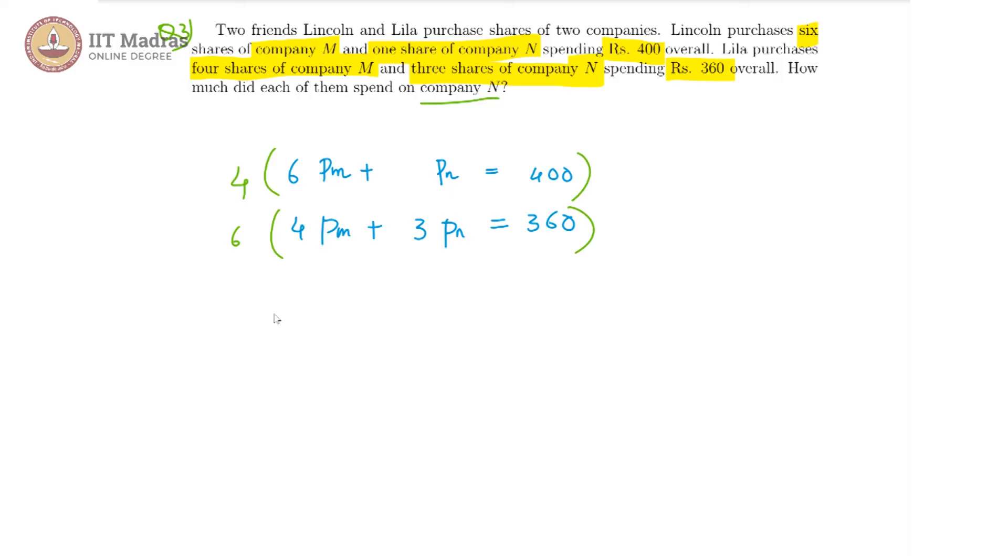So we are going to get from the first equation 24 PM plus 4 PN is equal to 1600. Whereas, from the second equation we get 24 PM plus 18 PN is equal to 2160.